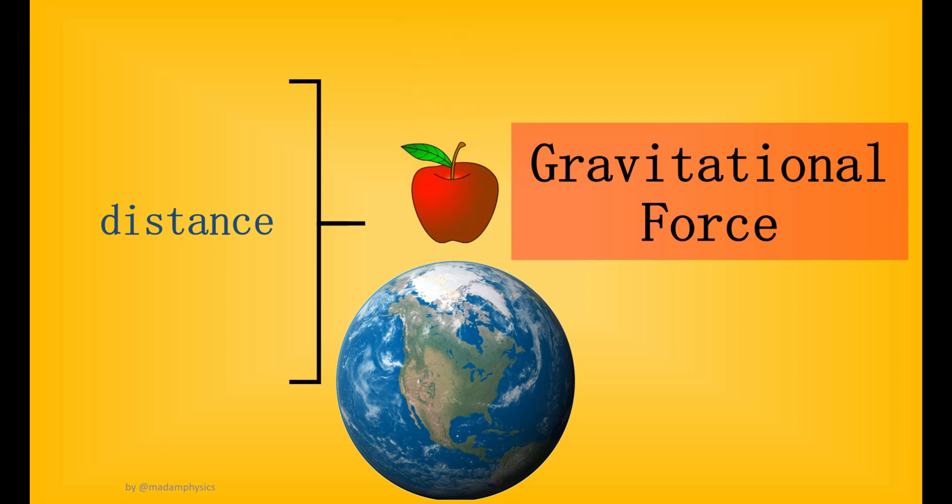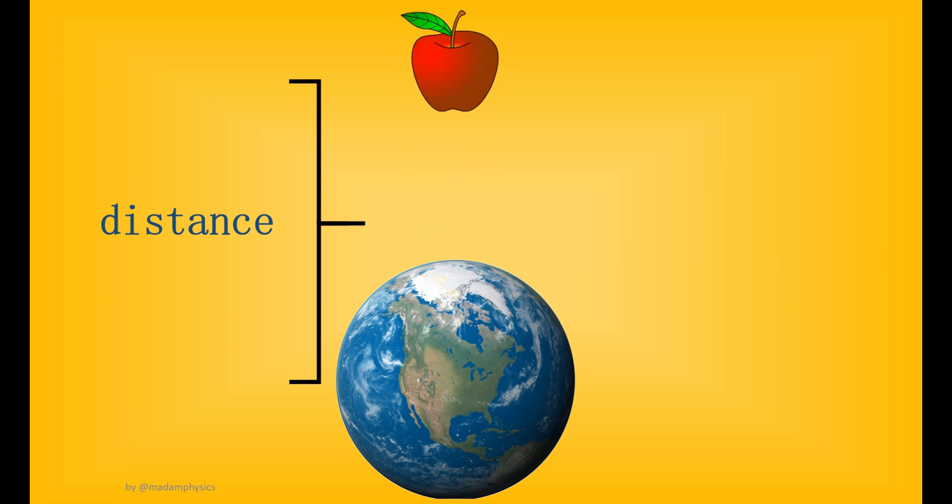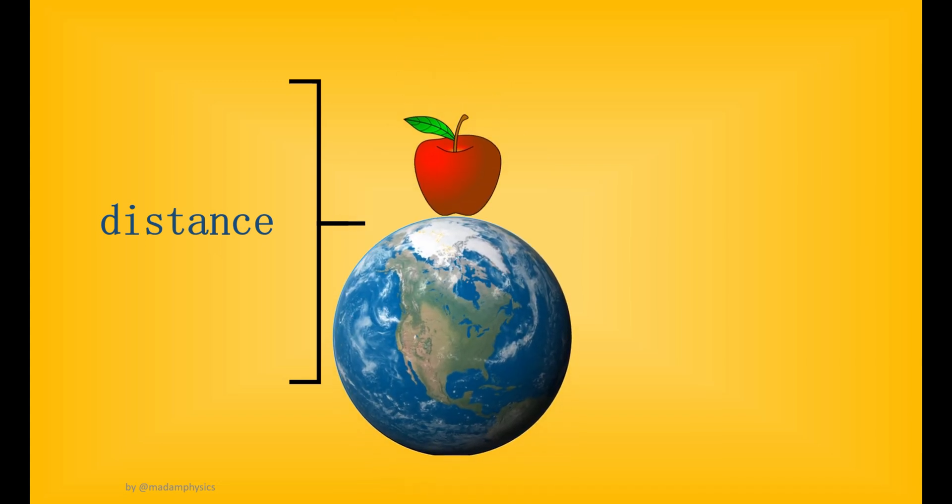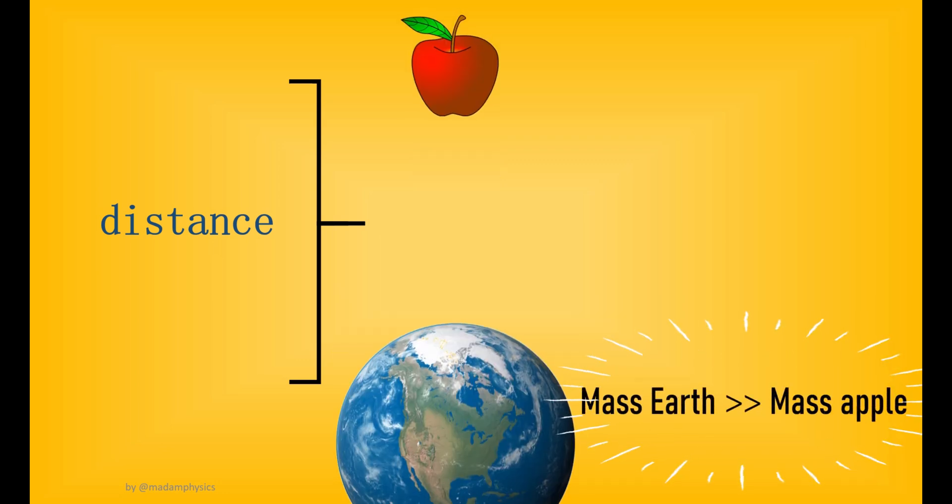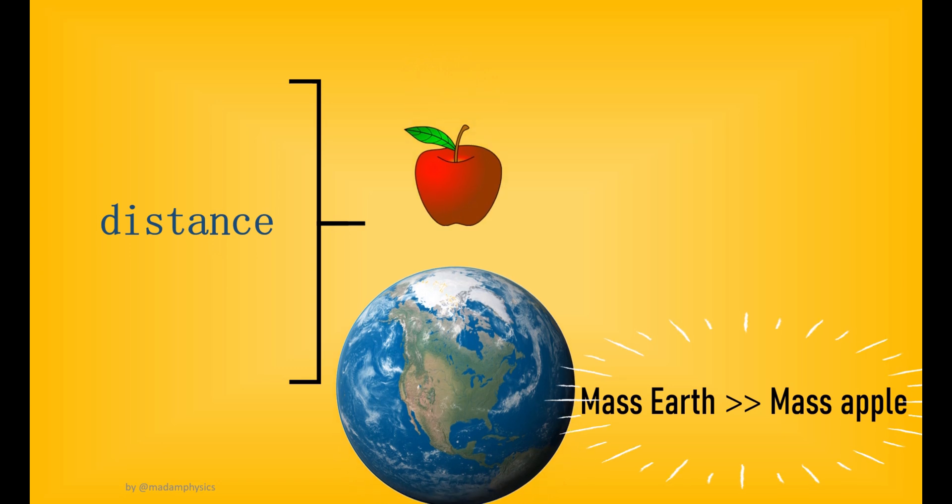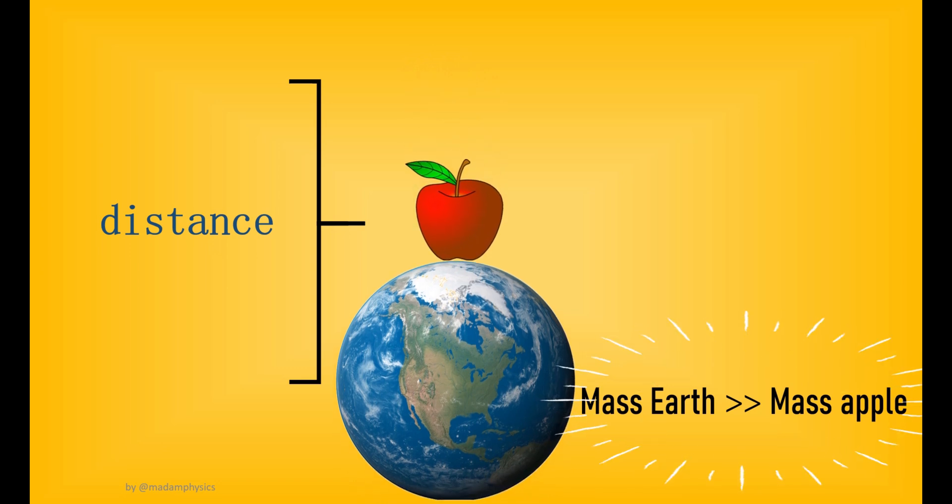Does the apple move towards the earth or does the earth move towards the apple? Actually, both objects are moving towards each other. The earth is pulling the apple down and the apple is pulling the earth too. However, since the earth has bigger mass, the effect of force on earth is less obvious.